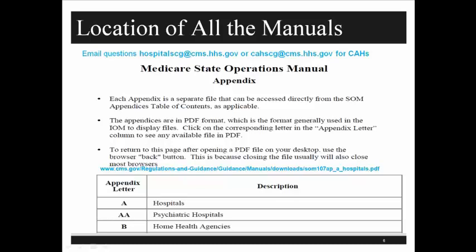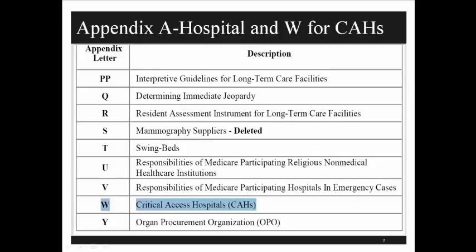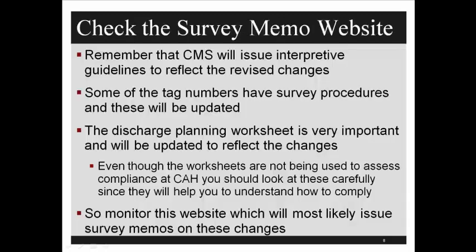You can write and send questions to CMS and get a copy in writing. For critical access hospitals, you scroll down and click on W — that's where the critical access hospital manual is located. CMS will issue interpretive guidelines to reflect these new changes. Some of the tag numbers have a survey procedure; not all of them do, but these will be updated.